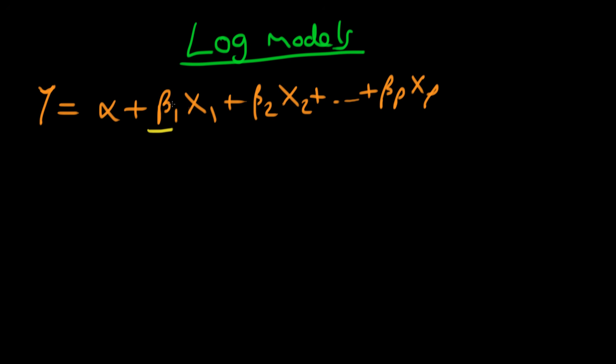It shows the marginal partial effect of that variable. So it says if x1 was to increase by one unit, assuming all my other variables are constant, then what happens to my dependent variable?